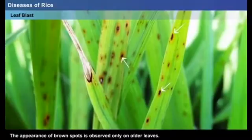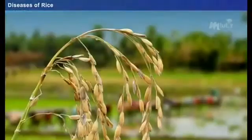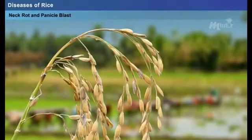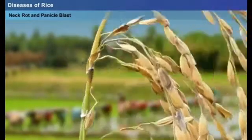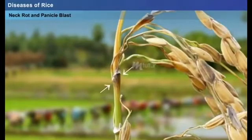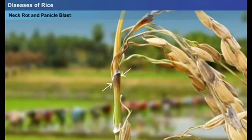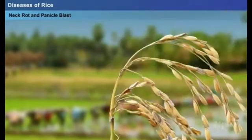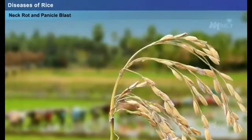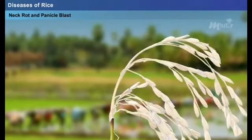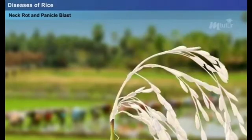The appearance of brown spots is observed only on older leaves. Neck rot and panicle blast: when younger neck nodes are infected, the formed triangular lesions extend around the neck causing damage to the panicle. The affected panicles change to white in color and when the infection prolongs, they may break and fall to the ground.